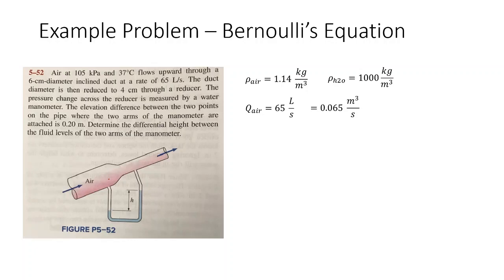We know the equation Q equals v times A through any segment. So we can say that the flow rate, which is constant, is equal to the velocity through segment one times the area of segment one, and is also equal to v2 times A2.